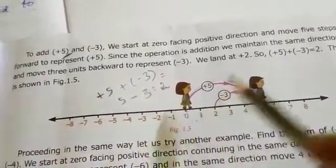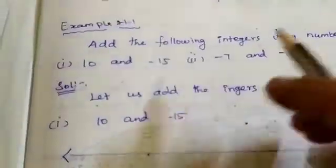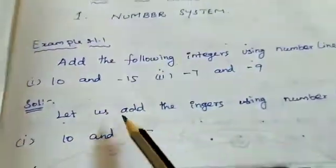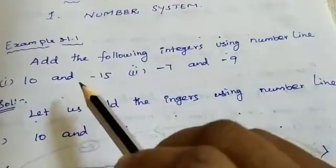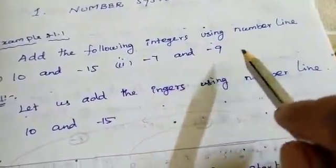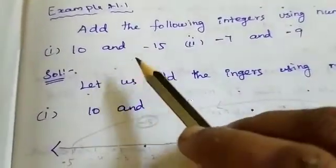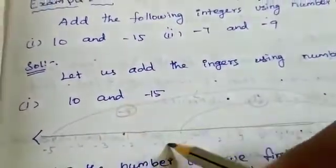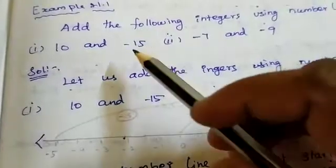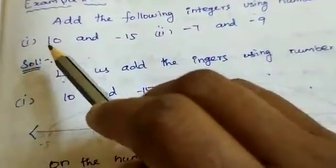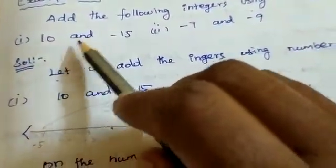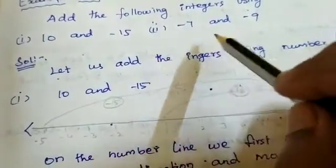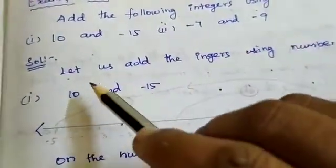Now we are going to Example 1.1: add the following integers using the number line. Two sums are given — first part: 10 and minus 15; second part: minus 7 and minus 9.